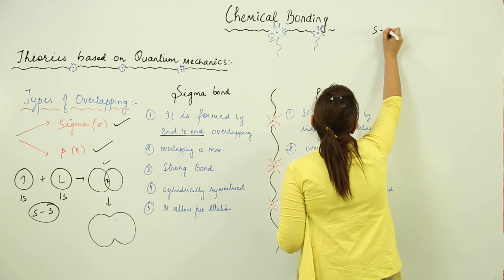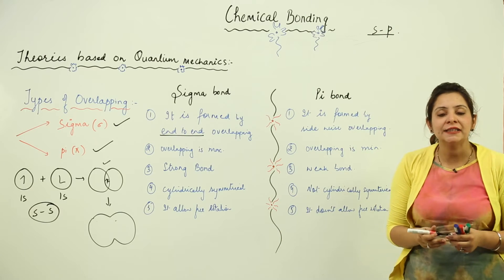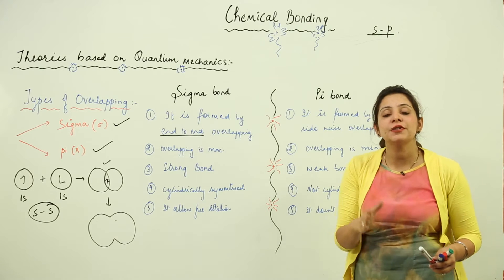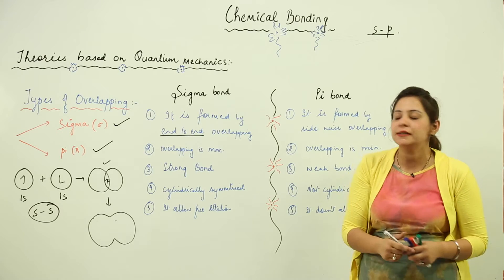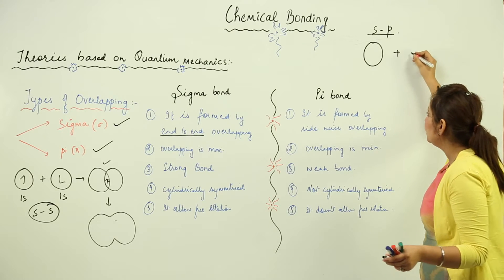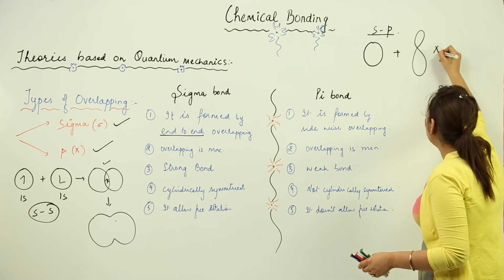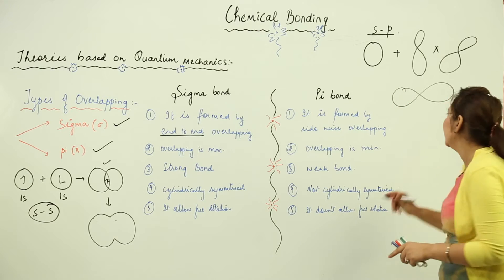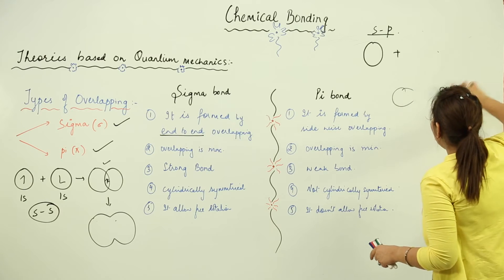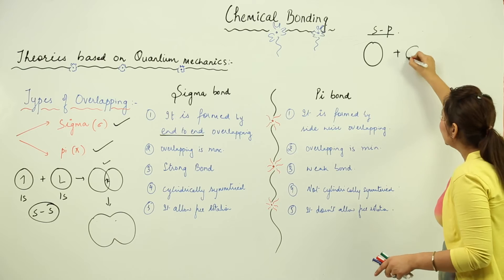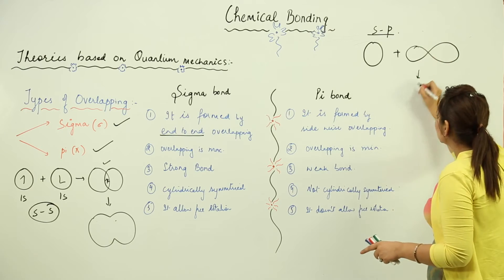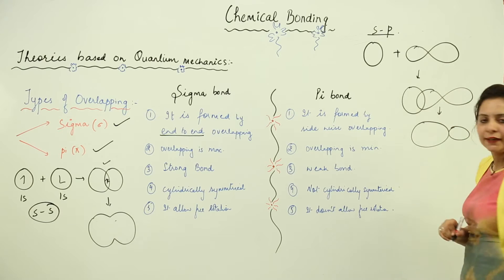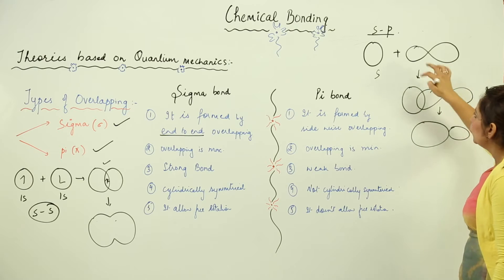We can also observe Sigma bonding in s and p combinations, but the p orbital we select must be symmetrical around the internuclear axis. So we cannot combine s with a p orbital that is not aligned along the internuclear axis. We must select the p orbital that is symmetrical around the internuclear axis. When s and that p combine, they form a Sigma bond.